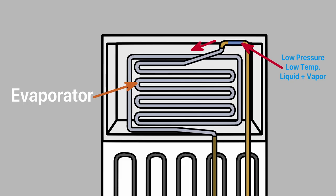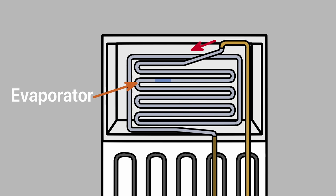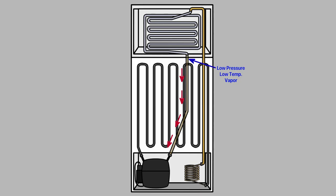When the low-pressure, low-temperature liquid and vapor refrigerant enters the evaporator, it will absorb all of the heat present in the surface of the evaporator by absorbing all of the heat from the surrounding region. The cold-chilled liquid refrigerant will completely turn into low-pressure, low-temperature vapor refrigerant inside the evaporator coils. The low-pressure, low-temperature vapor refrigerant will then leave the evaporator and enter the compressor through the connecting pipe to start the cycle over again.